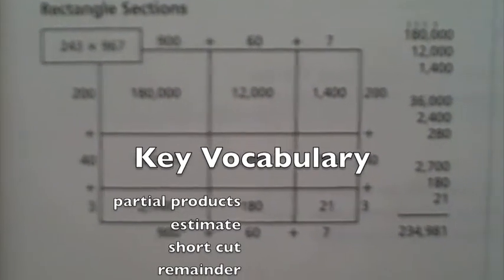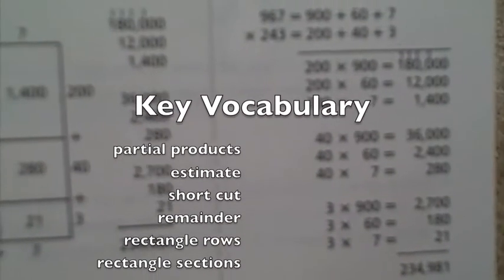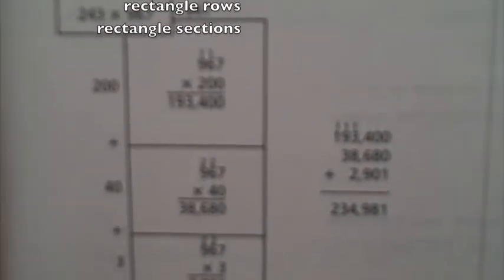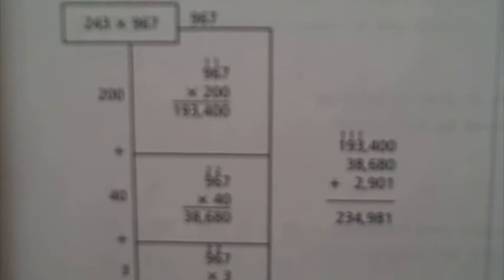Students will learn to estimate using rounding and compatible numbers and then adjust the estimated number. Remainders will be interpreted in real world context and expressed as fractions or decimals. Students will divide by decimal numbers and learn to distinguish between multiplication and division when there are decimal numbers.